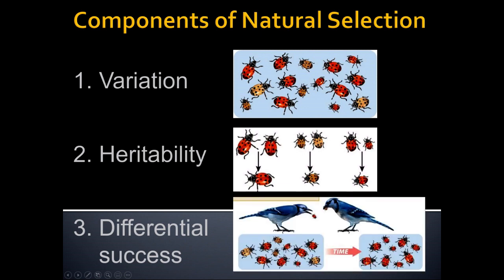Finally, there needs to be differential success based on that variability being passed down from one generation to the next. Here's an example: we have variation at the genetic level in both color and toxicity of ladybugs. It's passed down to their offspring. Predators learn to stay away from the red ladybugs, which also have a higher level of toxin. Over time, the yellow ladybugs get eaten more frequently — the red toxic trait is more adaptive — and we end up with a change in the population over time.